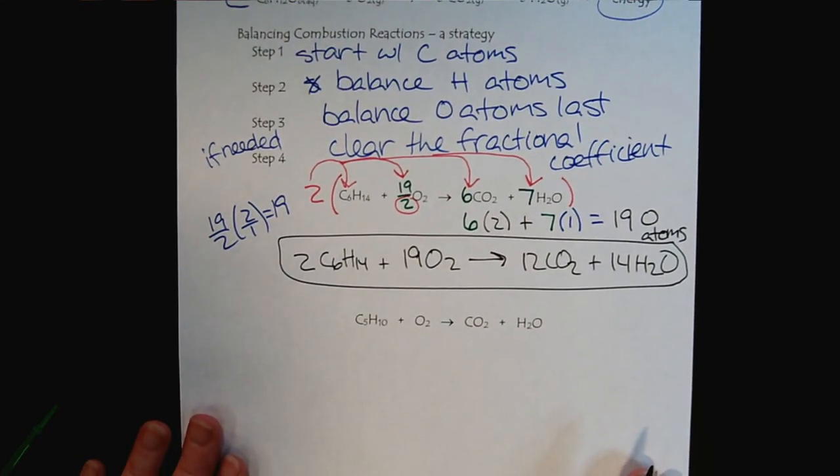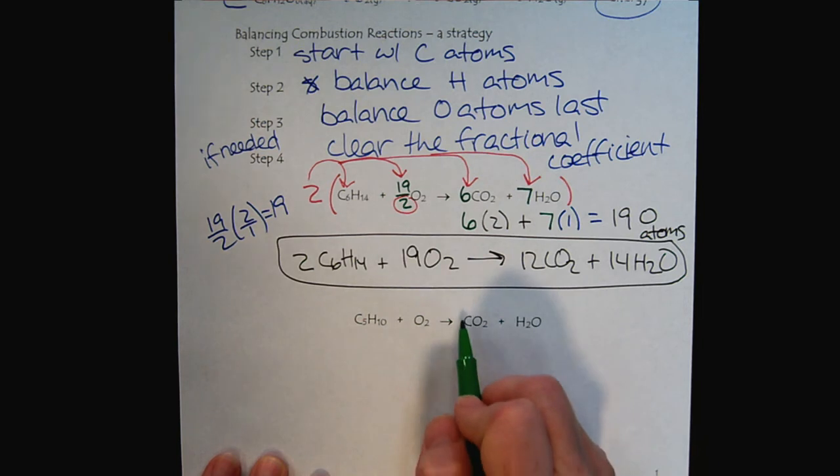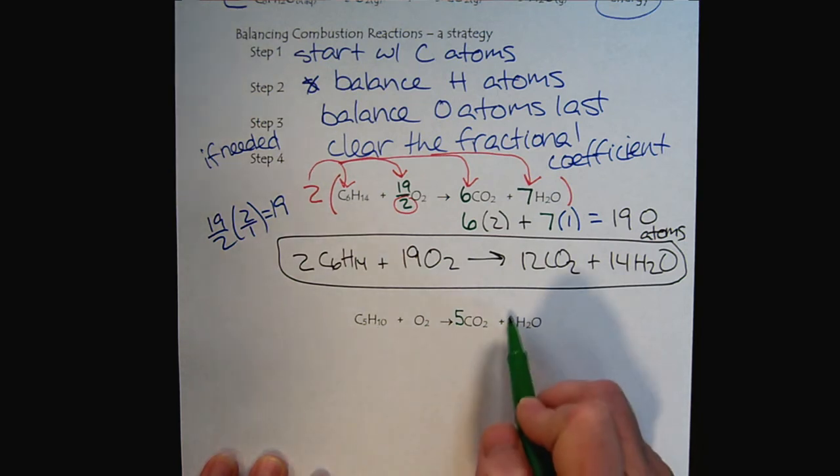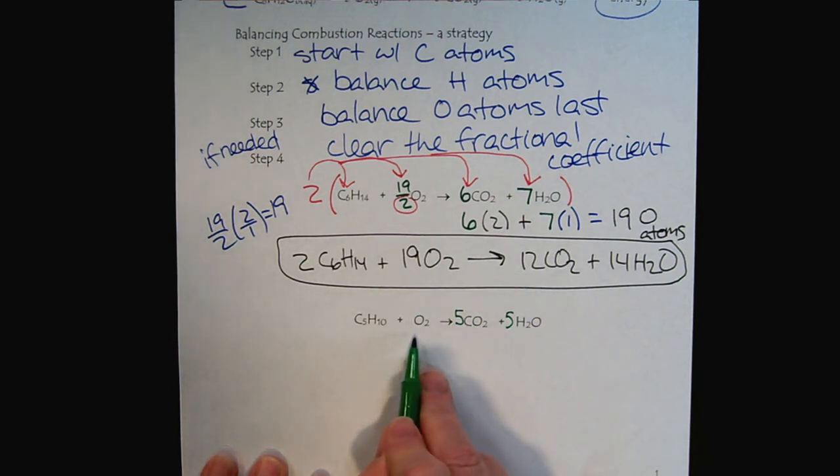Let's practice this one more time before you get started on your homework. Start with the carbons. 5 carbons here, put a 5 in front of CO2. 10 hydrogens, put a 5 in front of water.